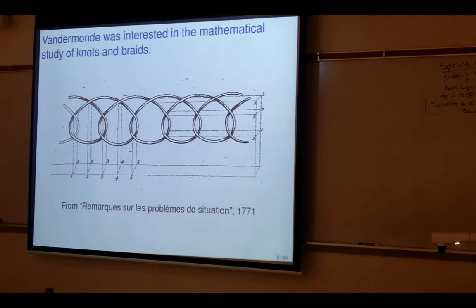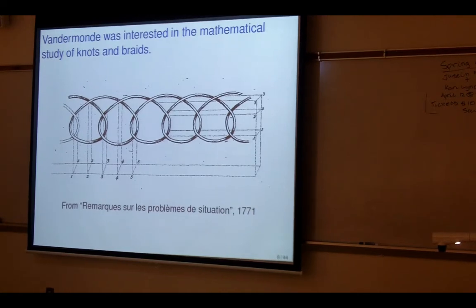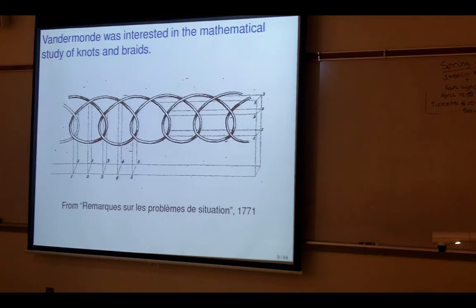The earliest I've been able to trace the mathematical study back is Vandermonde — probably best known from the Vandermonde determinant — who only wrote four mathematical papers, one of which started knot theory, topology, and graph theory. Well, maybe not quite started, but it was a really early paper in all three of those things.